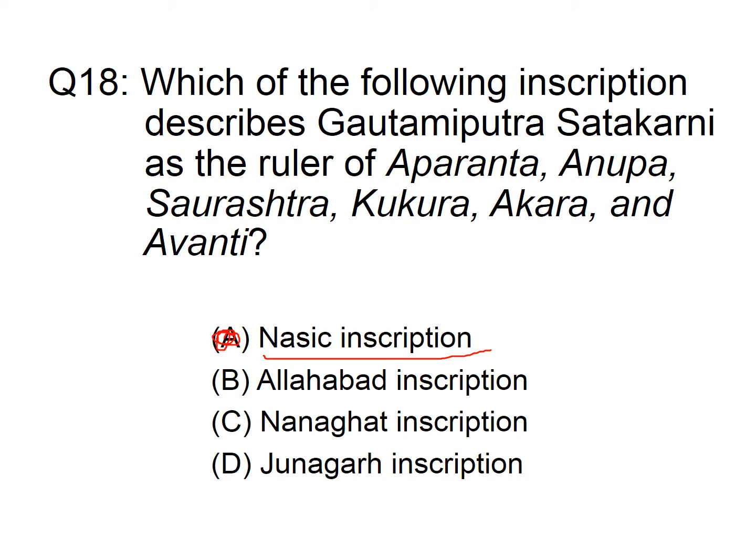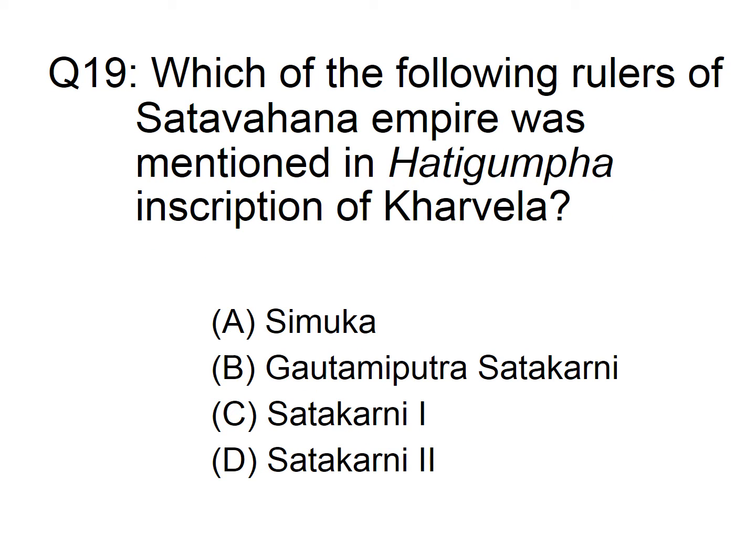Gautamiputra Satakarni was also described as the destroyer of the Shaka, Pallava, and Yavana power. Which of the following rulers of the Satavahana Empire was mentioned in the Hathigumpha inscription of Kharvela? Option A: Simuka, B: Gautamiputra Satakarni, C: Satakarni I, D: Satakarni II. The answer is option D, Satakarni II.